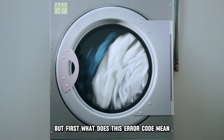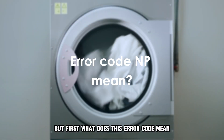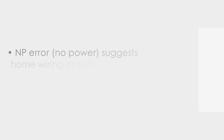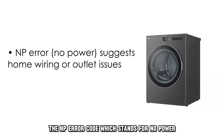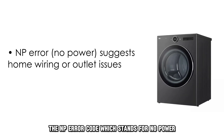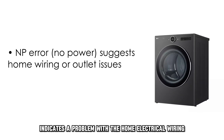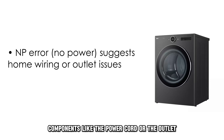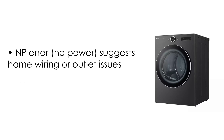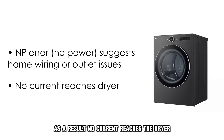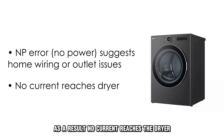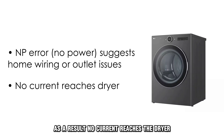But first, what does this error code mean? The NP error code, which stands for no power, indicates a problem with the home electrical wiring components like the power cord or the outlet. As a result, no current reaches the dryer.